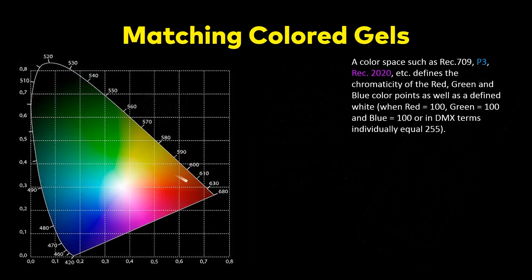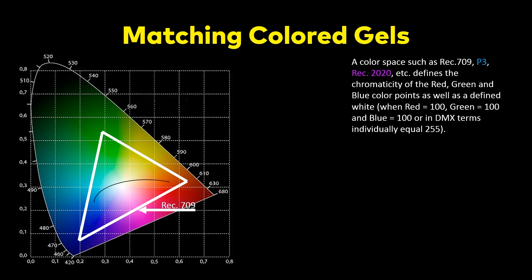Color spaces such as Rec 709 and Rec 2020 define their values in either values of 100 or in equal parts of 255. That white spot is your D65 — your daylight 6500 Kelvin — as a white point. And from there, as you go off 255 steps on your dimmer, you'll get to your green, to your red, and your blue.